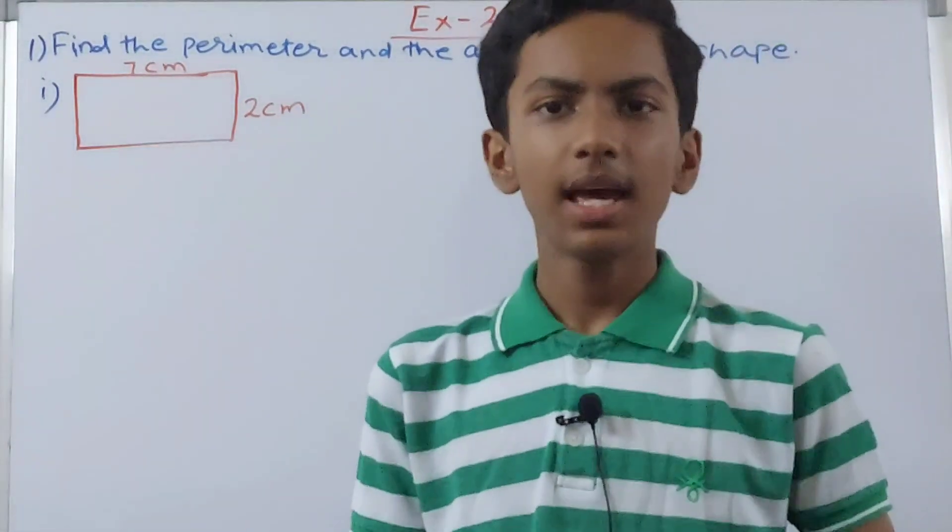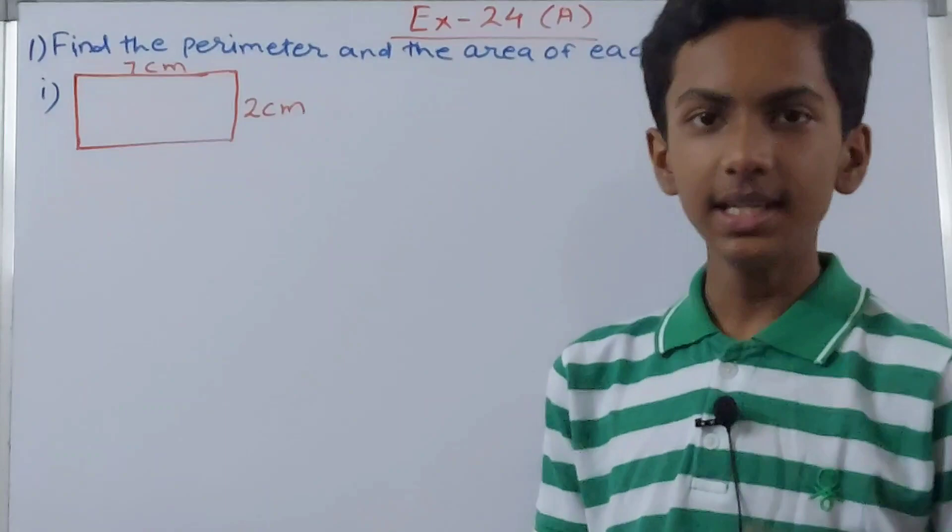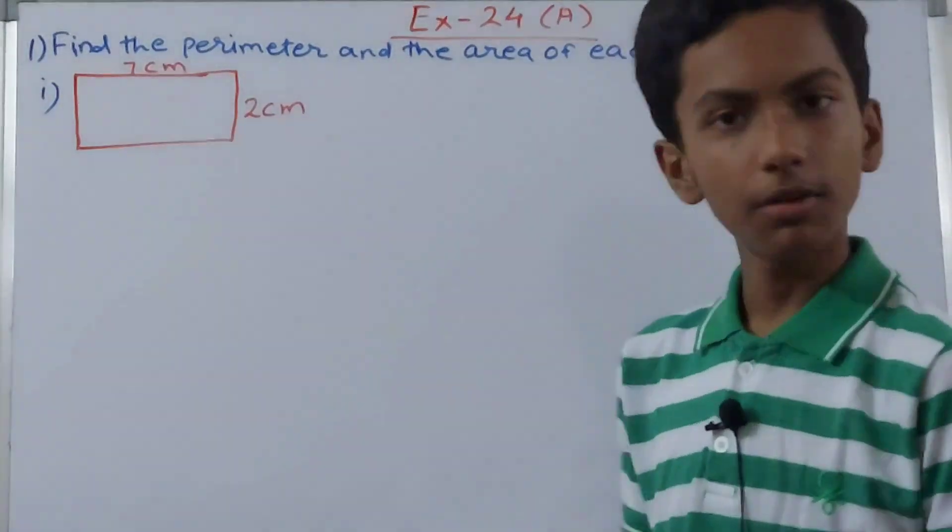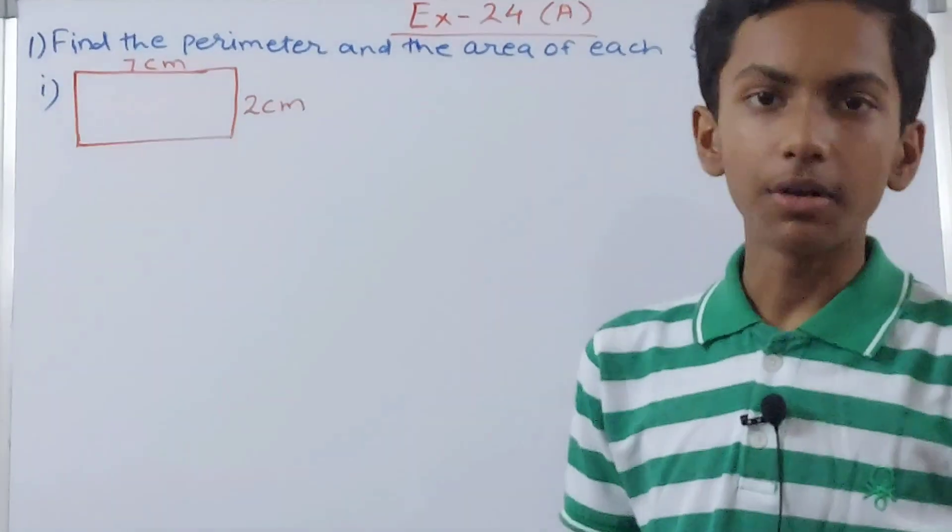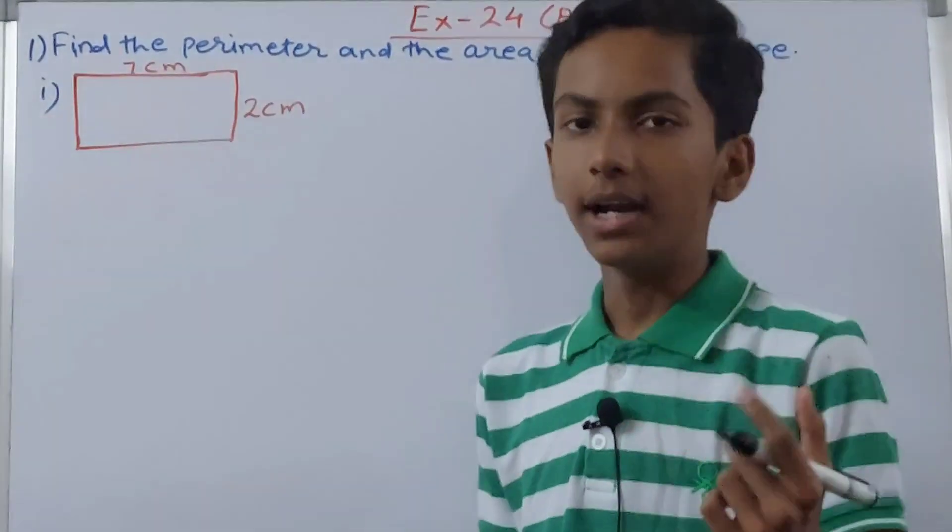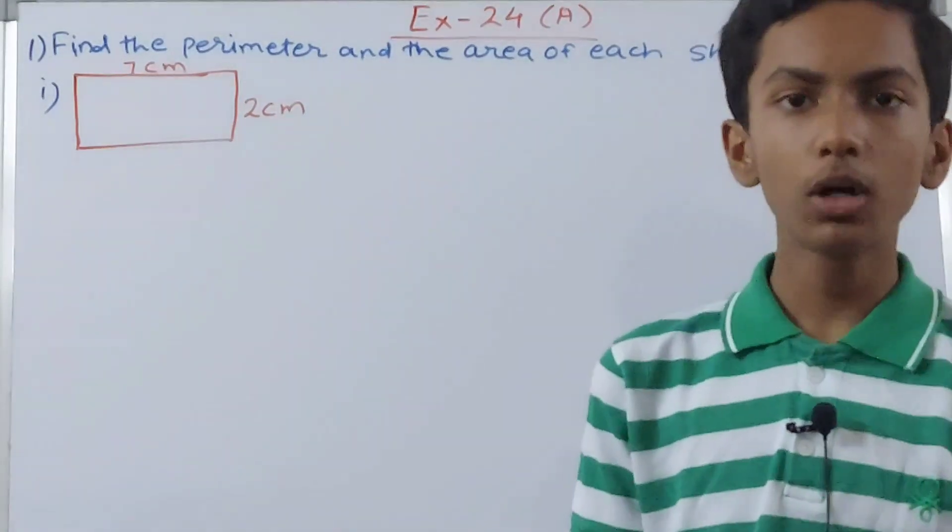So we do this every year and it's very simple. The perimeter is basically the measure of the boundary of the figure. This is the boundary. We will add all the measures of the four sides to get the boundary.